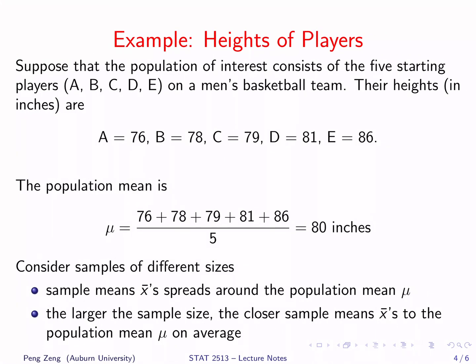Let's illustrate the sampling distribution of the sample mean using a concrete example. Suppose that the population of interest consists of the five players on a men's basketball team. We call them A, B, C, D, E. Their heights are listed in the slide. We can calculate the population mean of heights. Add the five numbers together and divide it by 5. The population mean is 80 inches.